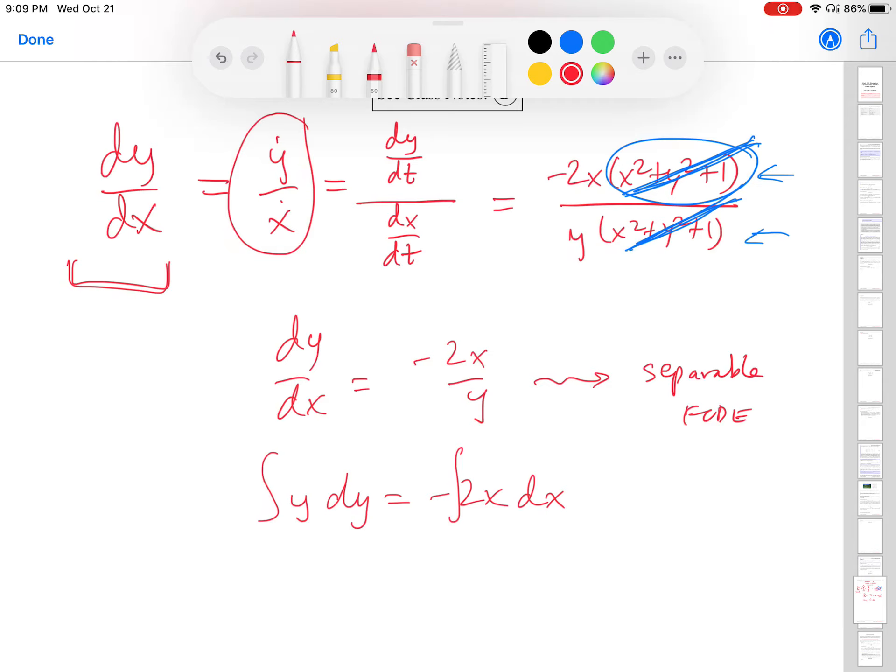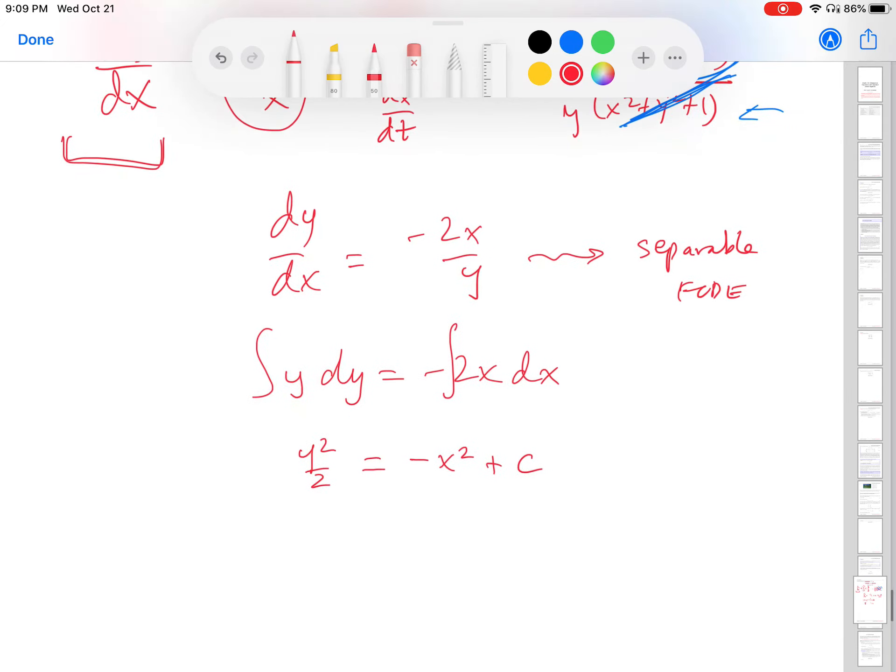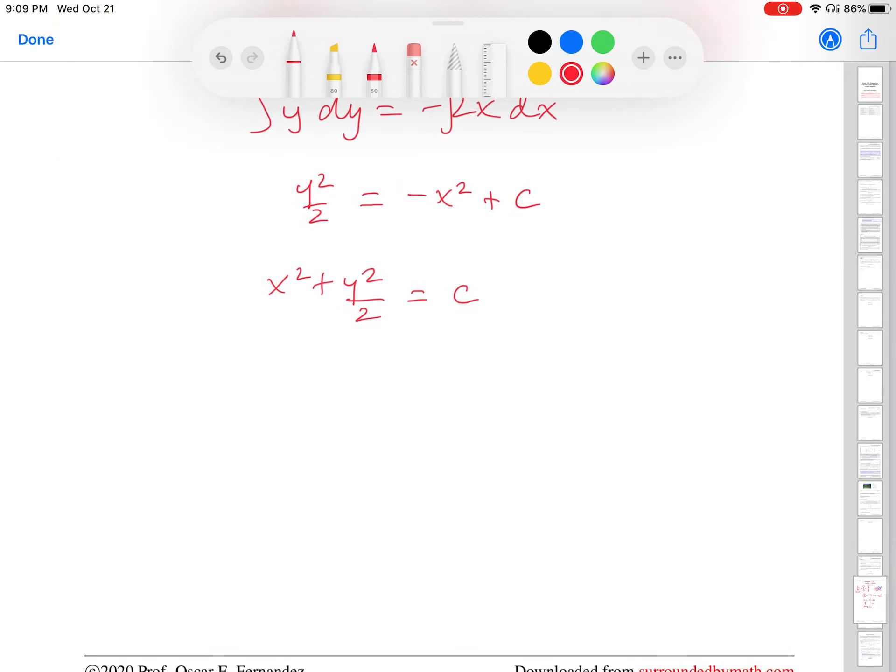So on the left-hand side, I get y squared over 2. Right-hand side, I get minus x squared and then plus some constant. And when I add over this x squared, I get x squared plus y squared over 2 equals this constant. Already this tells me a lot. You might recognize this as the equation of an ellipse. So I can think a little bit more about what that looks like.